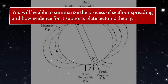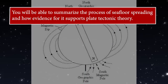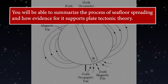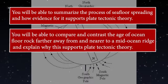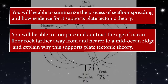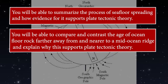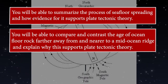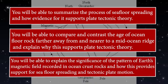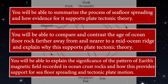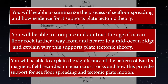By the end of this video, you will be able to summarize the process of seafloor spreading and how evidence for it supports plate tectonic theory. You will be able to compare and contrast the age of ocean floor rock farther away from and nearer to a mid-ocean ridge and explain why this supports plate tectonic theory, and you will be able to explain the significance of the pattern of Earth's magnetic field recorded in ocean crust rocks and how this provides support for seafloor spreading and tectonic plate motion.